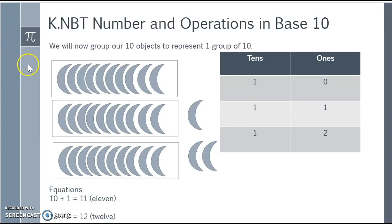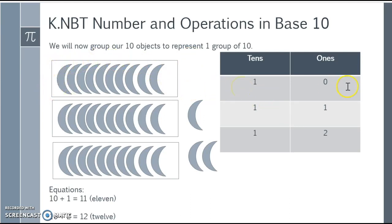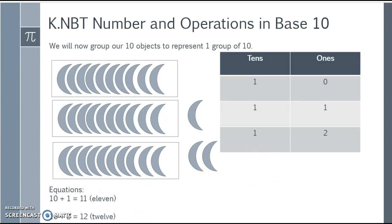So we have 10 moons and I grouped them in a box, giving us one group of 10 and zero ones, which is 10. If I have one group of 10 and add a single moon by itself, we now get 11. If I have a group of 10 and two single moons, I now have 12, and we can continue this pattern over and over again.